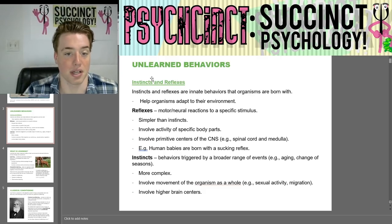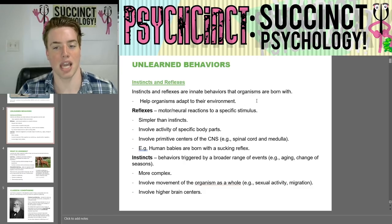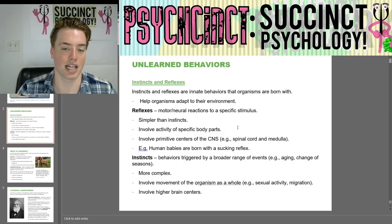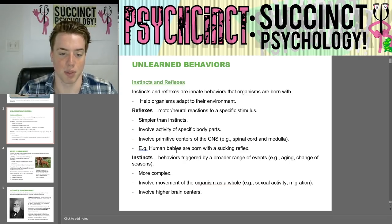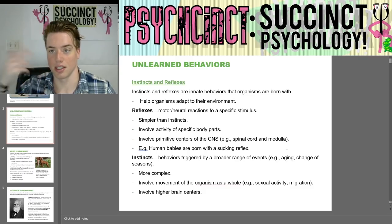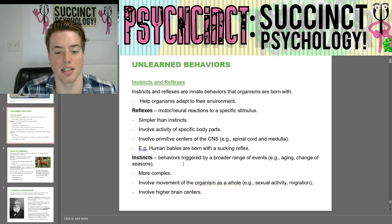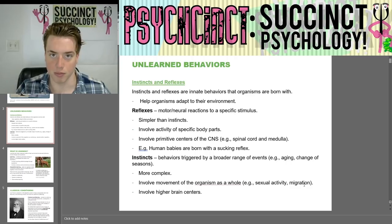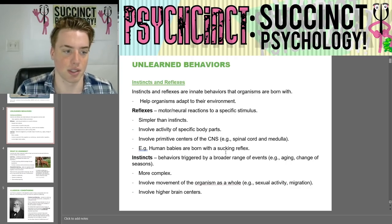Unlearned behaviors are comprised of instincts and reflexes, which are innate behaviors that organisms are born with that help them adapt to their environment. Reflexes are motor or neural reactions to a specific stimulus — they are simpler than instincts, involve activity of specific body parts, and involve primitive centers of the central nervous system such as the spinal cord and medulla. For example, human babies are born with a sucking reflex. An instinct is behavior triggered by a broader range of events — such as aging or change of seasons — more complex and involving movement of the organism as a whole, such as sexual activity and migration. Instincts involve higher brain centers.